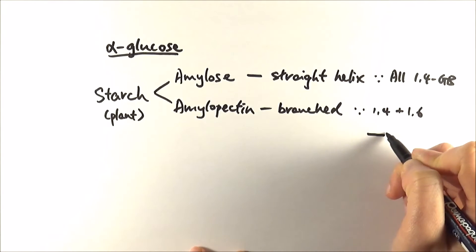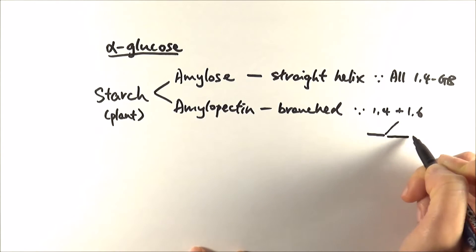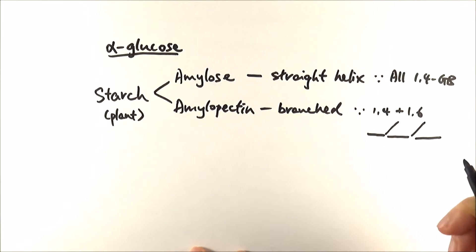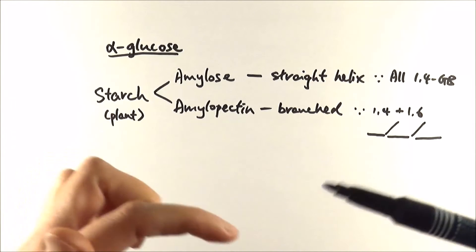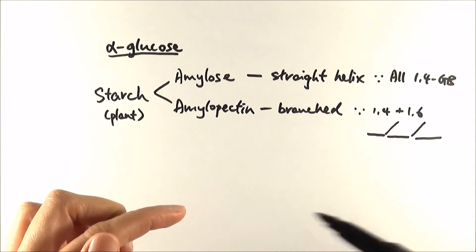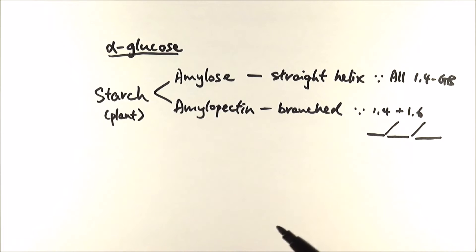It's one 1,6 bond every 25 alpha glucose molecules and they make a branch like that. That is basically starch. So what you get is the amylose is kind of like wound up in a straight helix and then it's got amylopectin that sits in between, so it makes it very compact.